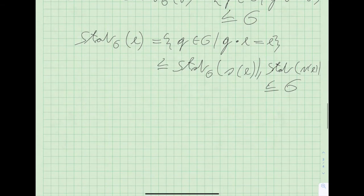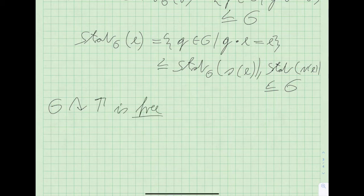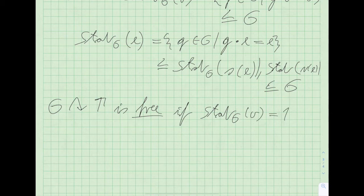The action by G on the graph gamma is free if all stabilizer groups of the vertices are trivial — meaning every non-identity group element moves everything. We assume throughout that there are no inversions.